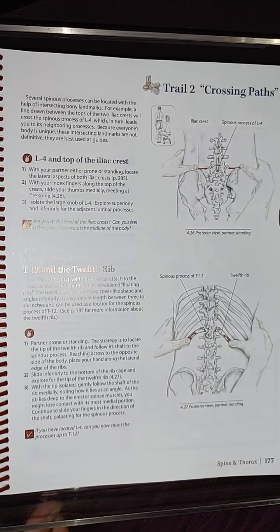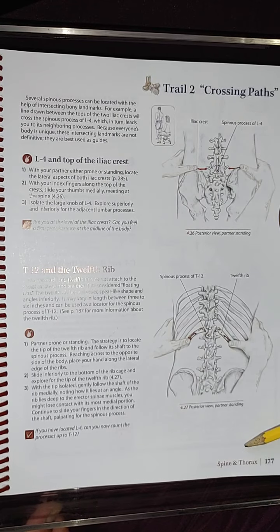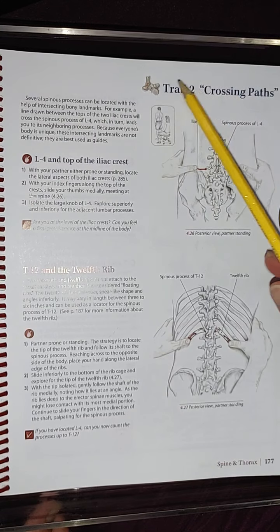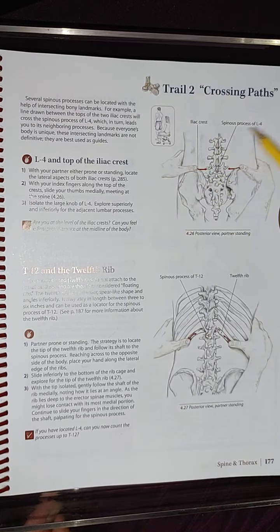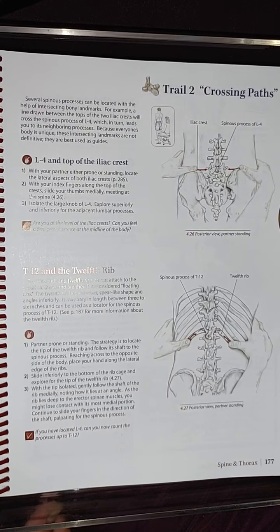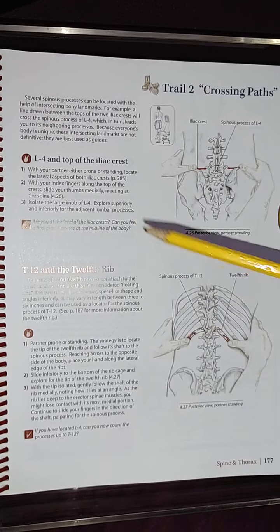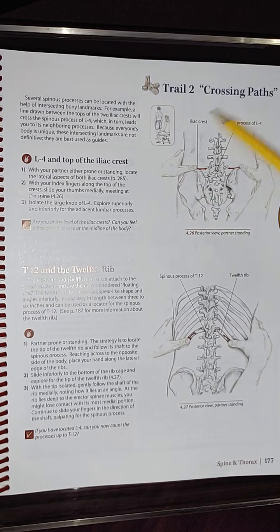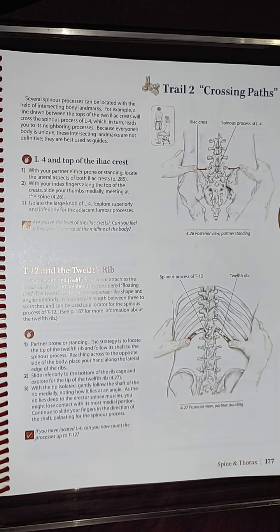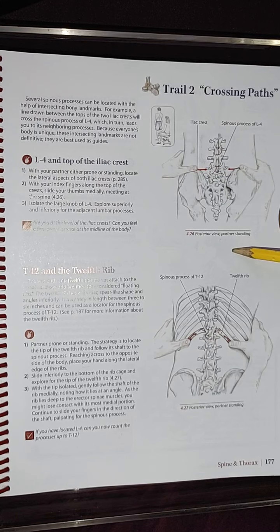Hi guys, so I'm here at Trail Guide to the Body, presenting Spine and Thorax Trail 2, where you're crossing paths. We're still at page 177, looking at image 4.26. This is a posterior view while the partner is standing.